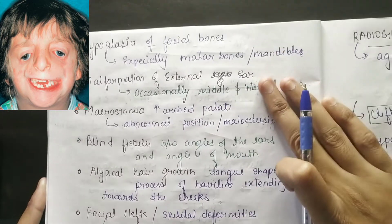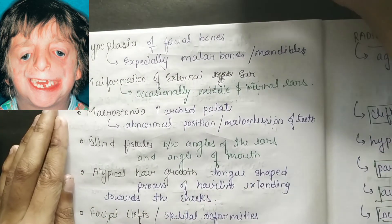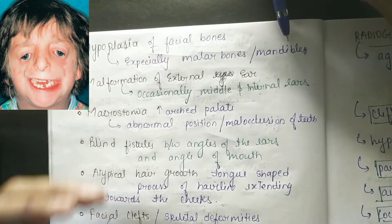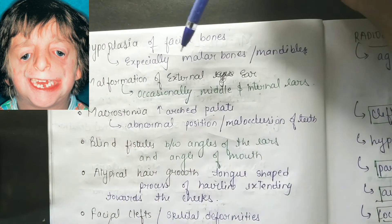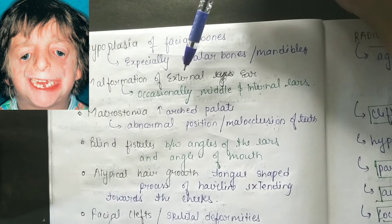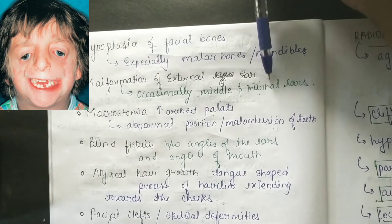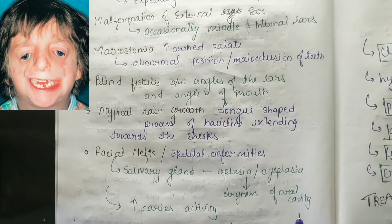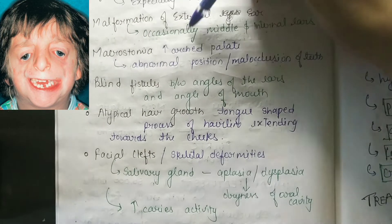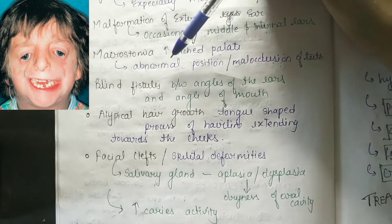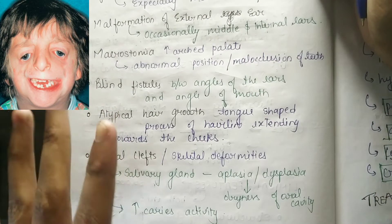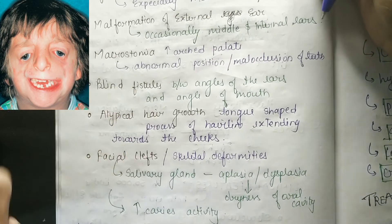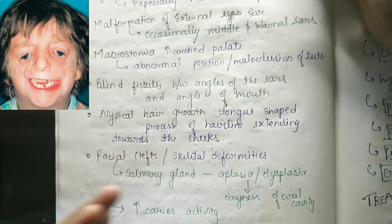There is hypoplasia of facial bones especially malar bones and mandible. There is malformation of the external ear, and occasionally middle and internal ears are affected. Macrostomia with increased arched palate and abnormal positioning and malocclusion of teeth are also seen.